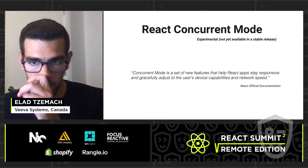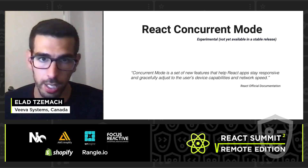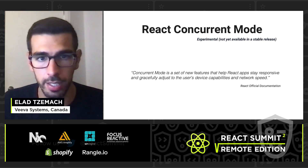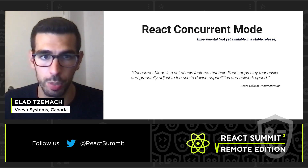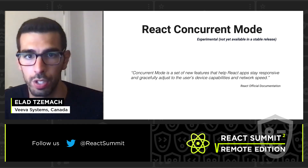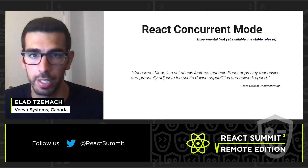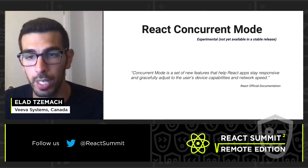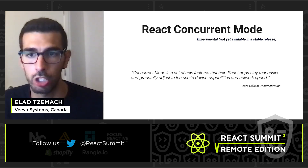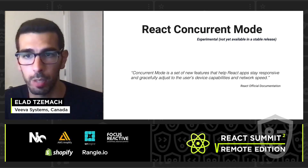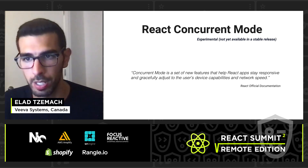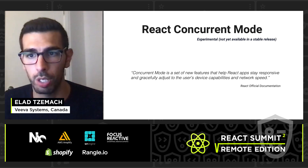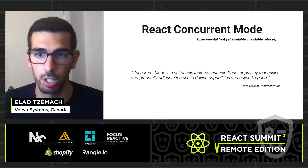So let's introduce concurrent mode. It is experimental, and it's a set of new features that help React apps stay responsive and gracefully adjust to the user's device capabilities and network speed. Because it is experimental, things may change, and it's not recommended for use in production just yet — except at Facebook, where it is being used in production. If you want more details, I would highly recommend checking out the official React docs.